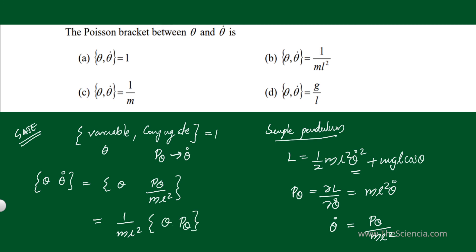Now apply this condition: the Poisson bracket of a variable and its conjugate equals 1. So what do we get? We get the Poisson bracket {theta, theta dot} equals 1/(M L squared). That is option B.